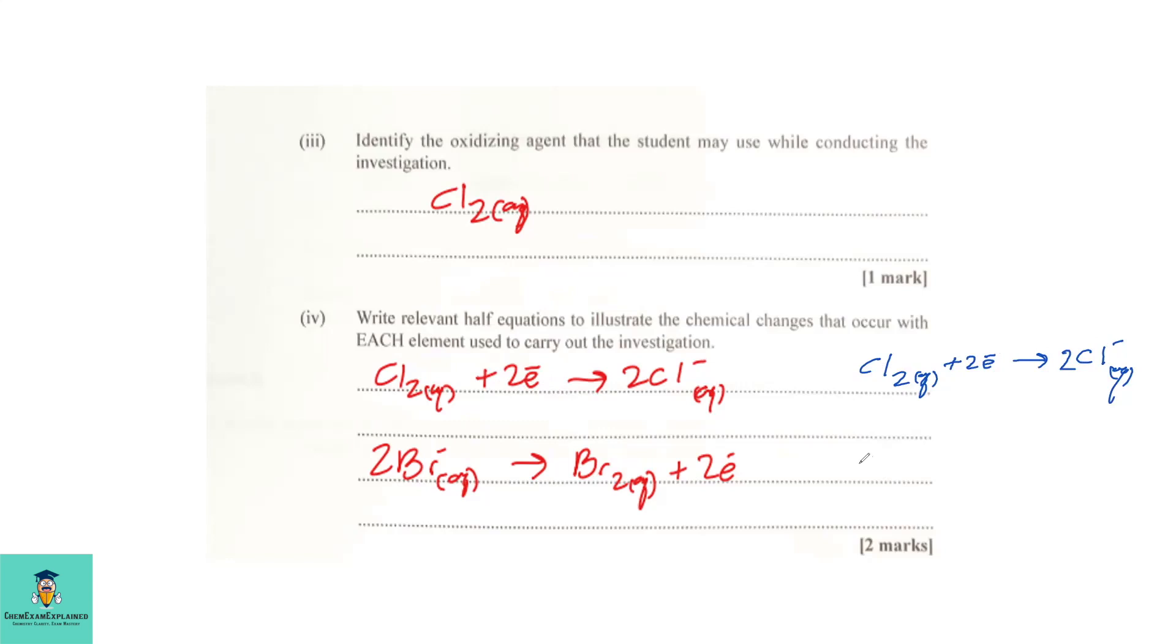For this one, we have bromide ions forming aqueous bromide. First thing again is to have mass balance. So, we add two here. And then, we look to see which side has the higher charge. Here I have negative one. Over here, I have zero. Zero is greater. Therefore, we add electrons to this side to balance the charge. For every equation, you must have two things. Mass balance and charge balance. So, these are our two equations representing the reaction taking place.